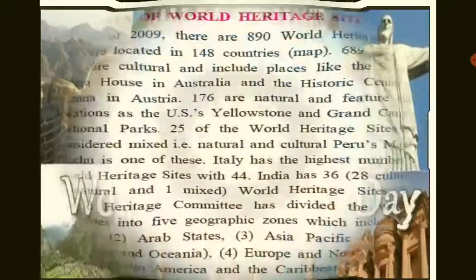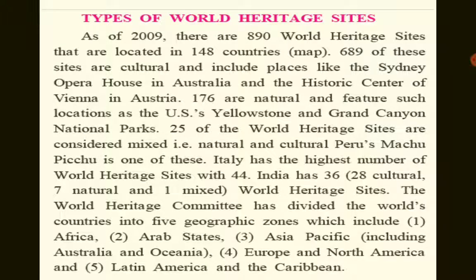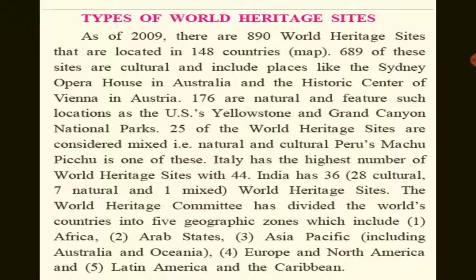The 18th of April is World Heritage Day. In 2009, there were 890 World Heritage sites located in 148 countries. 689 sites are cultural, including places like the Sydney Opera House in Australia and the historic center of Vienna. 176 are natural, including US Yellowstone and Grand Canyon National Parks. 25 are considered mixed — natural and cultural, like Peru's Machu Picchu. Italy has the highest number with 44. India has 36: 28 cultural, 7 natural, and one mixed.